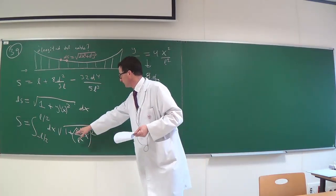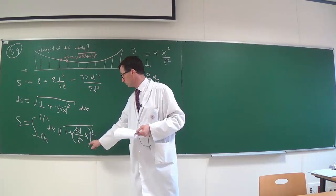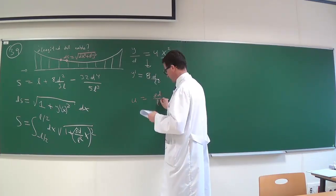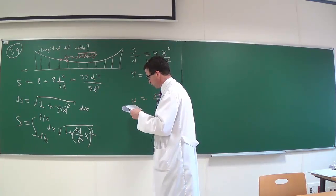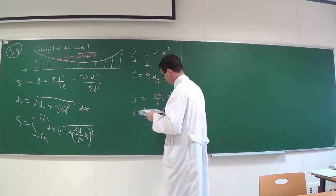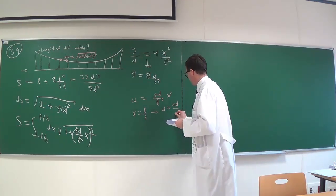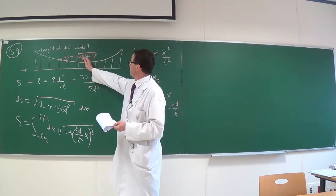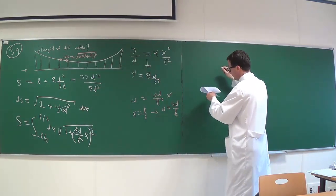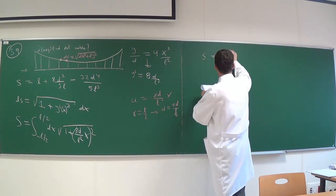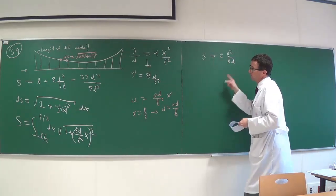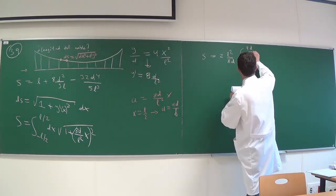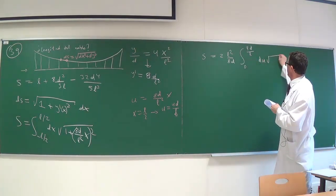Good. We proceed to extract the dimensions. Here we have an integral with a dimensional magnitude. A change of variable that adjusts the dimensions simplifies it. So we will change the variable to U equal to 8D divided by L² times X. The limits of integration are simple. If X is L/2, then U is 4D divided by L. Well, the integrand is even. It is clear that the right half of the cable has equal length as the left half.